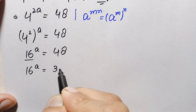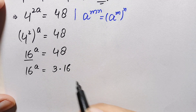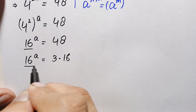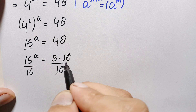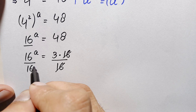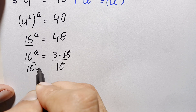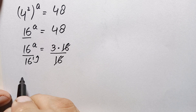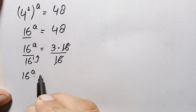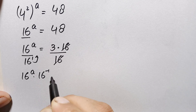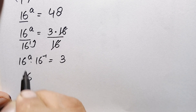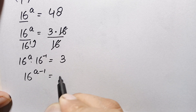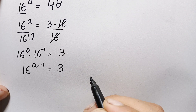We can write 48 as 3 times 16. Now dividing both sides by 16, the 16 on the right cancels, and the 16 raised to power a on the left moves so we get 16 raised to power a times 16 raised to power negative 1 equal to 3. Since the base is the same, we add the powers: 16 raised to power a minus 1 equals 3.